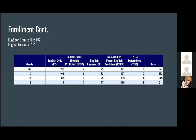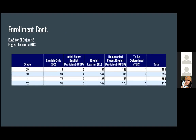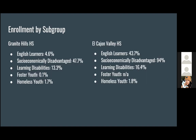We also wanted to look at English learners. Granite Hill High School has 151 English learner students, and El Cajon High School has 603 English learners. By subgroup percentage, Granite Hill has 4.6% English learners, whereas El Cajon has 43.7%. For socioeconomically disadvantaged students, Granite Hill has 47.7% compared to 94% at El Cajon Valley High School.